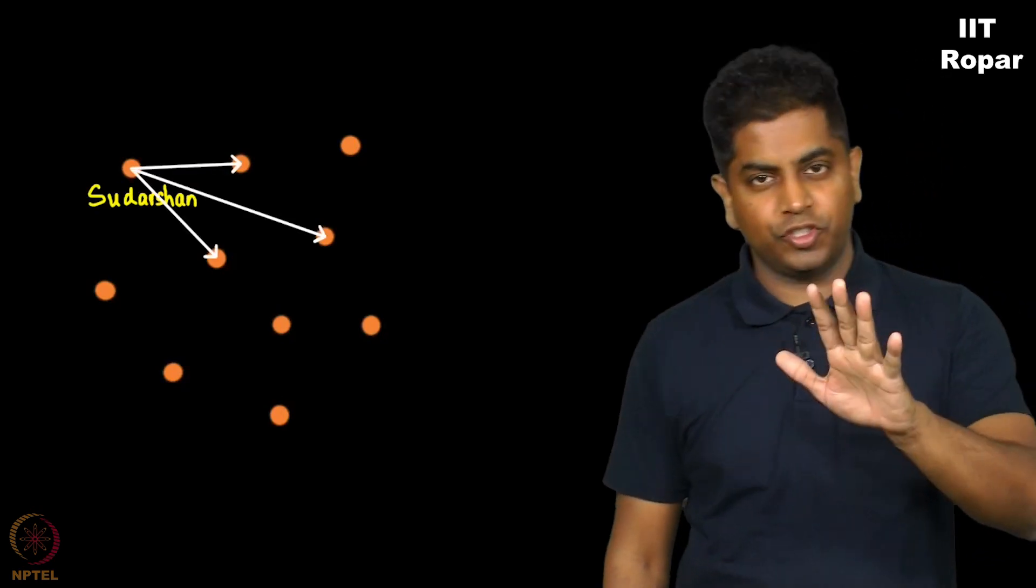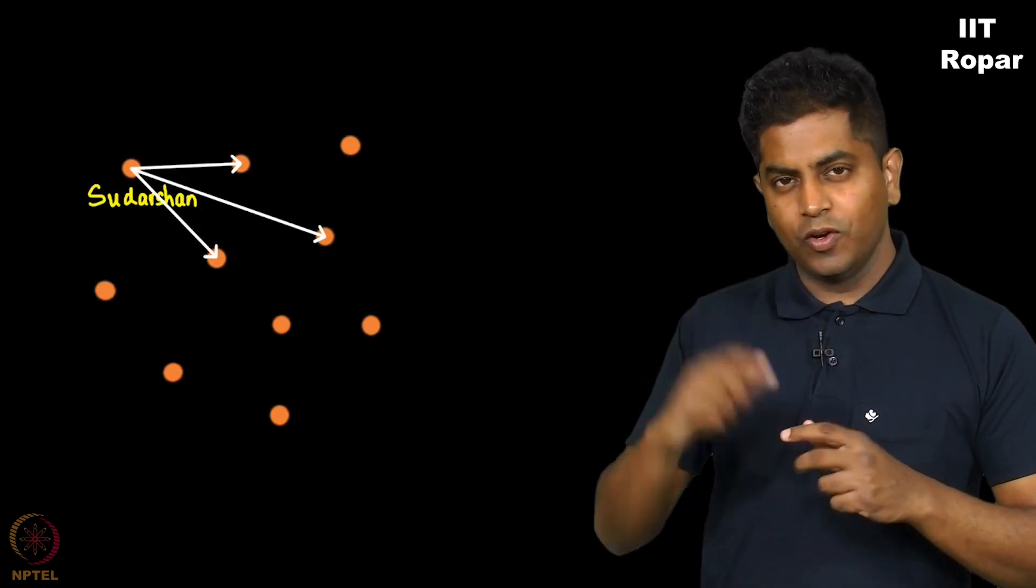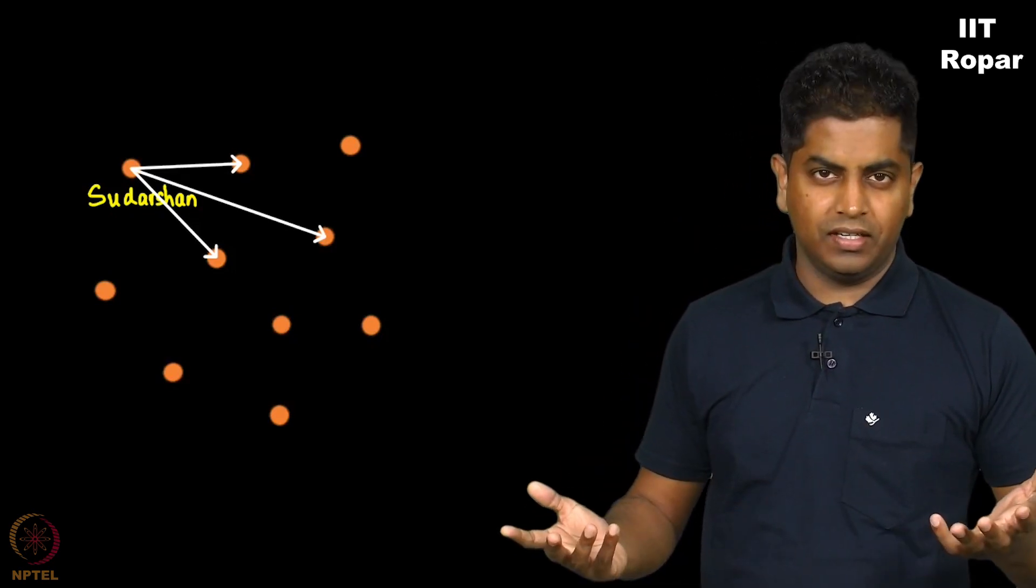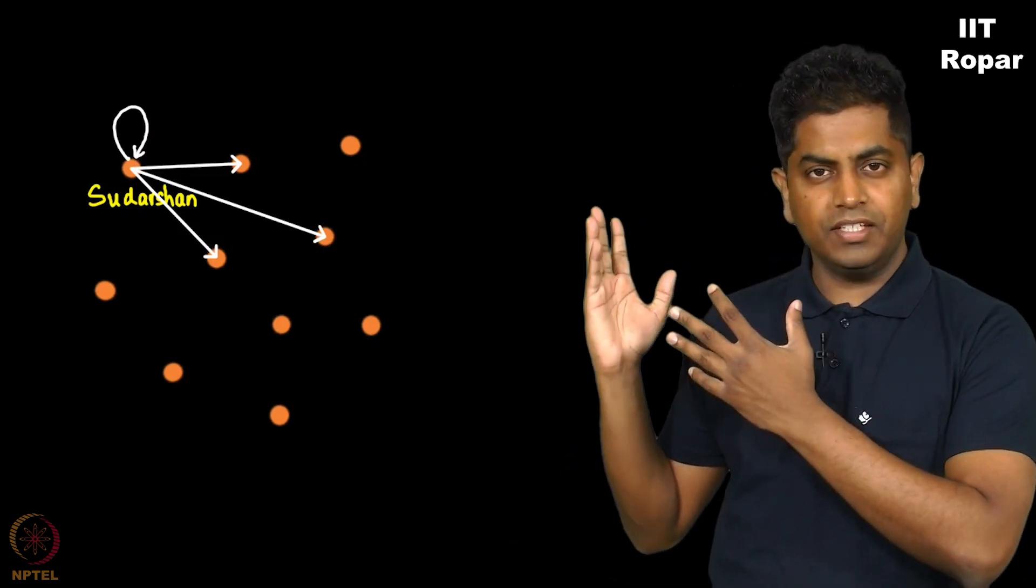One of them is me for sure. So when I vote for myself how does the arrow look like? You guessed it right. It should be a loop like this. Here is a loop.